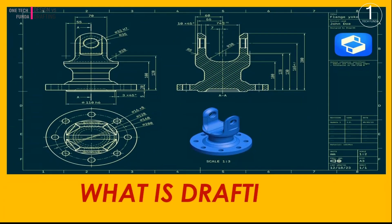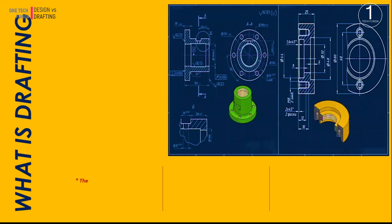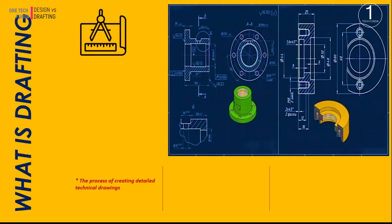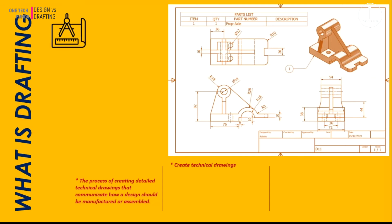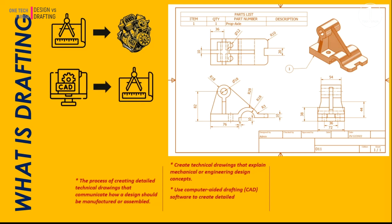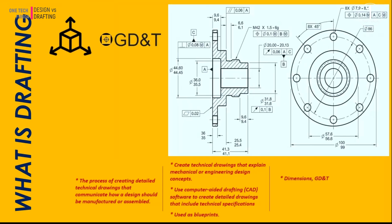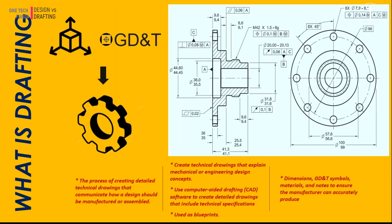What is drafting? Drafting, on the other hand, is the process of creating detailed technical drawings that communicate how a design should be manufactured or assembled. The goal of mechanical drafting is to create technical drawings that explain mechanical or engineering design concepts. Drafters use computer-aided drafting software to create detailed drawings that include technical specifications. These drawings are used as blueprints for construction. It involves adding dimensions, GD&T symbols, materials, and notes to ensure the manufacturer can accurately produce the part.